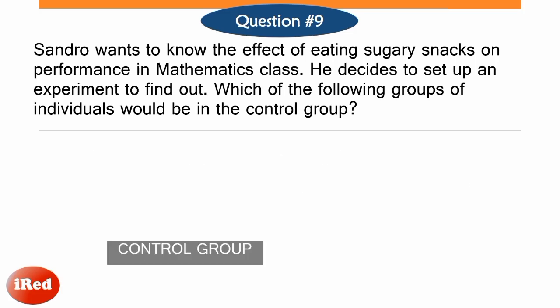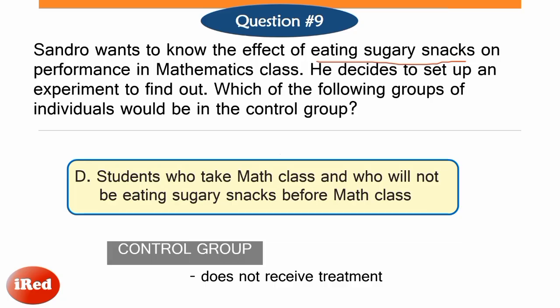To recall, the control group is the group that does not receive the treatment or is not exposed to the independent variable. In the problem, the independent variable is the eating of sugary snacks before math class. Thus, the control group is the class that does not eat sugary snacks before math class. Therefore, the correct answer is letter D: students who take math class and who will not be eating sugary snacks before math class.